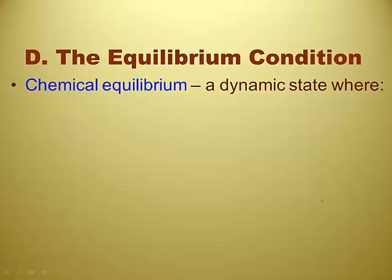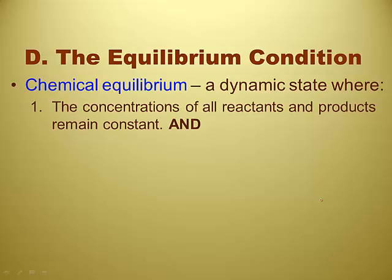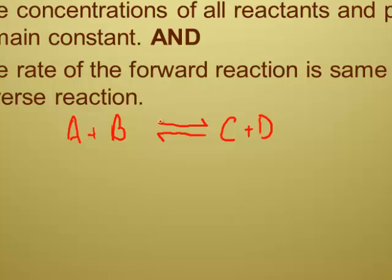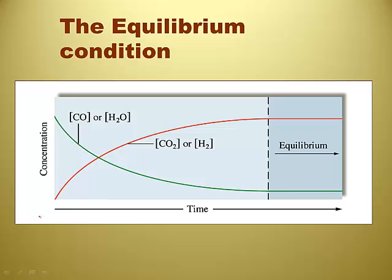Chemical equilibrium is a dynamic state where concentrations of all reactants and products remain constant and the rate of the forward reaction is the same as the reverse reaction. When we say the forward and reverse reaction, we might write something like A + B makes C + D. If we want to show they're both happening at the same rate, we draw the reversible arrow the same size. If chemical equilibrium has been achieved, we draw that; if it hadn't, we might draw it differently.